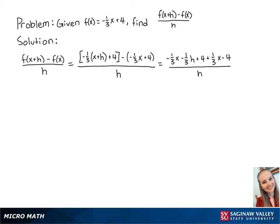If we combine like terms, we can see that negative 1 third x and 1 third x cancel out as well as 4 and negative 4.